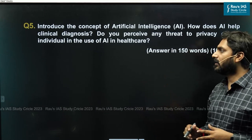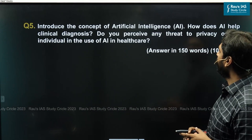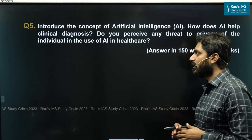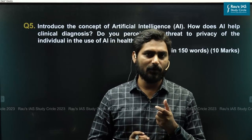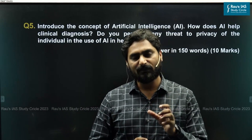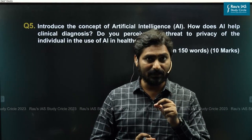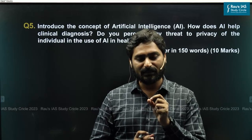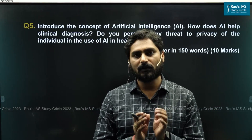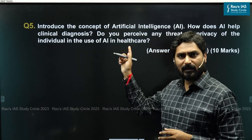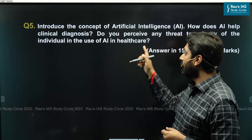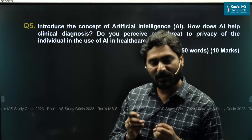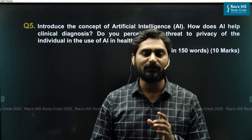This was the question in GS Paper 3: 'Introduce the concept of artificial intelligence (AI). How does AI help in clinical diagnosis? Do you perceive any threat to privacy of the individual in the use of AI in healthcare?' If you look at the dimensions, it is asking about a specific area — how AI is being used in healthcare, and even within healthcare, how it is being used in diagnosis. You have to note that it is asking a very specific application, and in the ethical dimension, it is asking specifically about privacy of the individual.